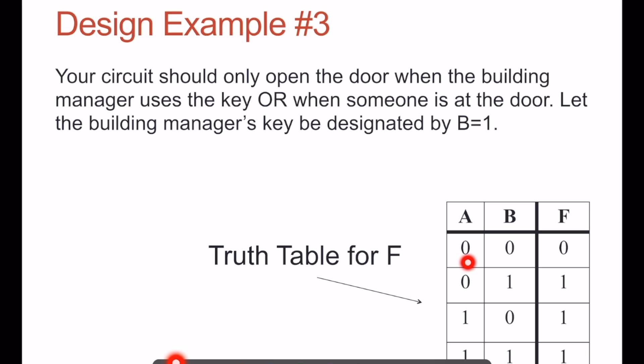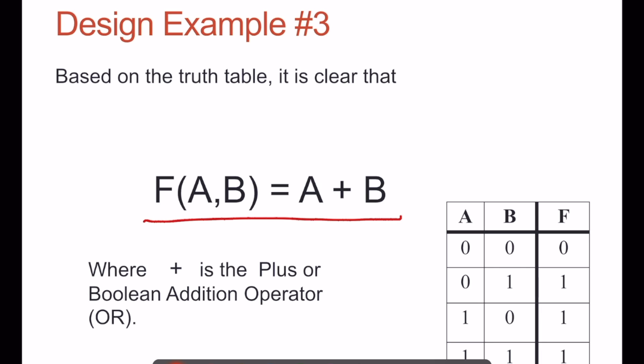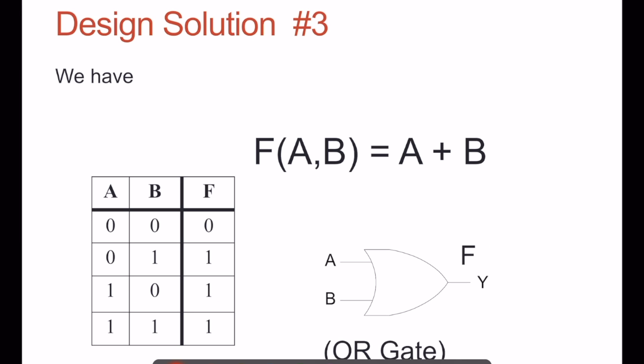When neither A is a 1 nor B is a 1, the output, the door does not open. That means if A is a 0 and B is a 0, then the door does not open. And this you will recognize, hopefully, as an OR gate. Here's the Boolean algebraic expression for an OR gate. We use the plus operator. And here is the circuit OR gate.